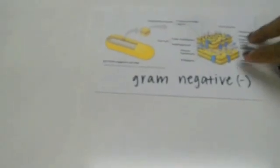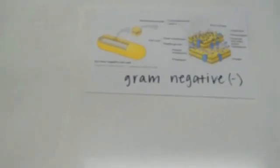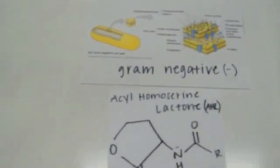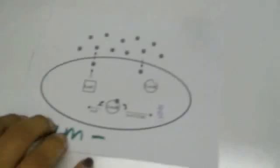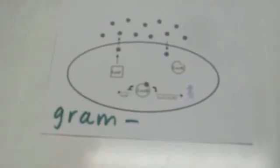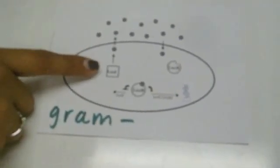Gram-negative bacteria sense acyl homocerine lactone with LUX-I and LUX-R complexes. In general, the acyl homocerine lactone signaling molecule is secreted by a LUX-I protein.